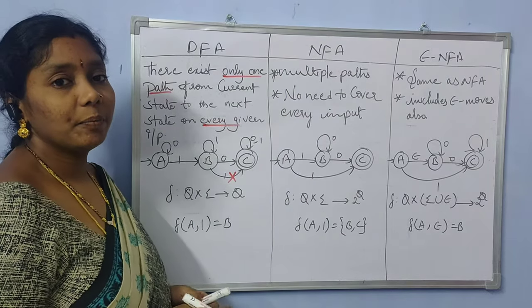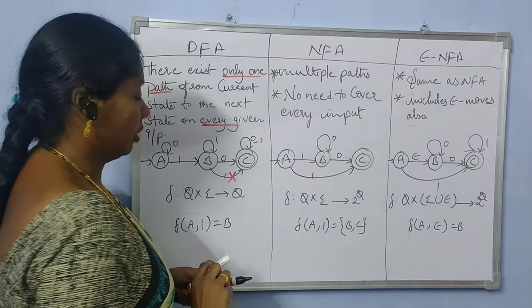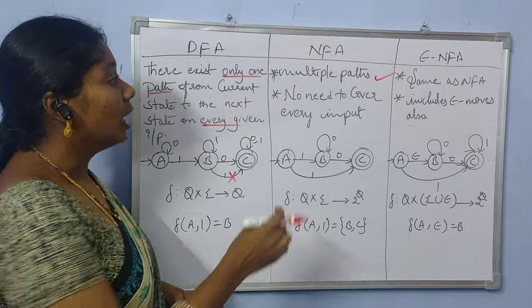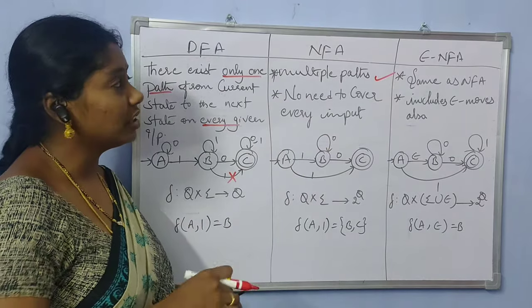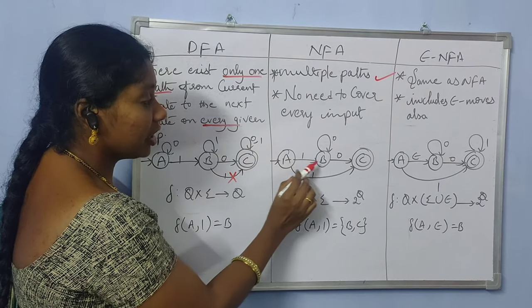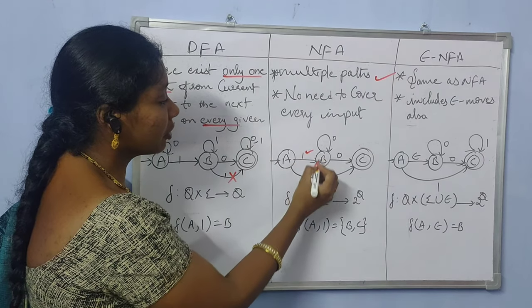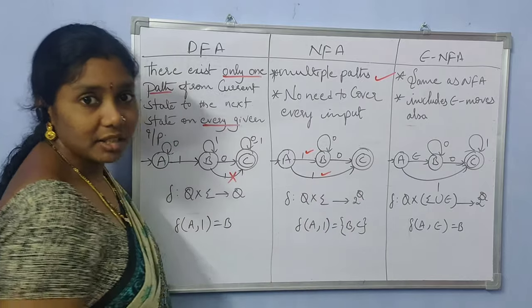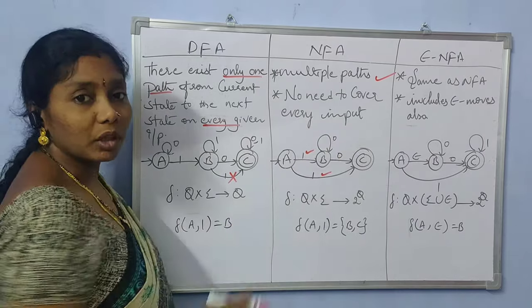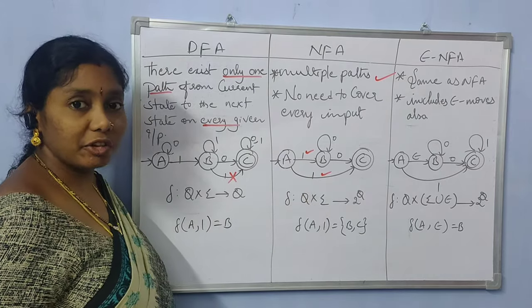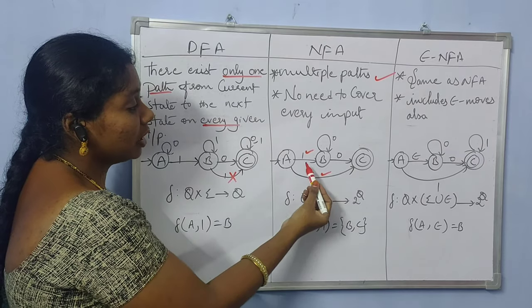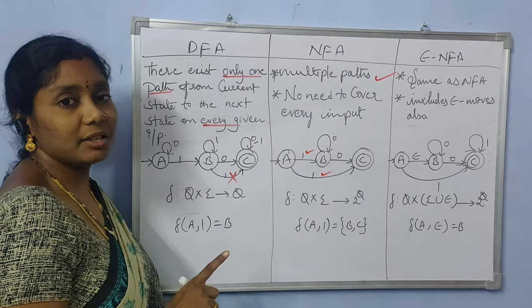In the case of NFA, multiple paths are allowed. From one state on a given input, you can have more than one transition, and there is no need to cover every input. For example, from state A on input 1, transitions go to both B and C — that is more than one path. Also, some inputs may have no transition at all, which is allowed in NFA but not in DFA.